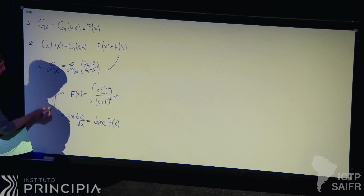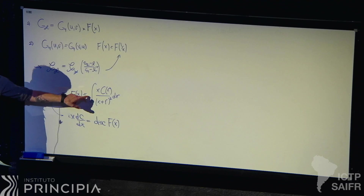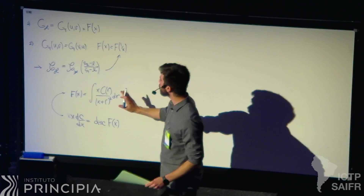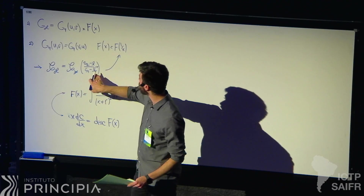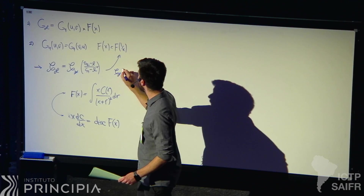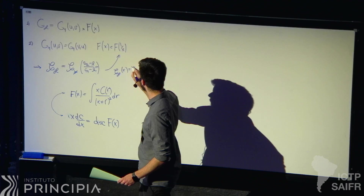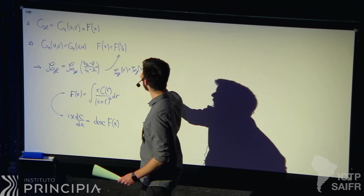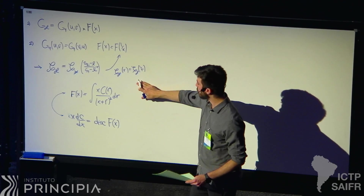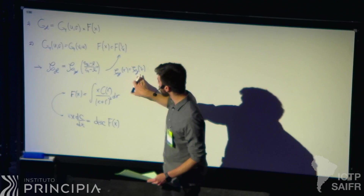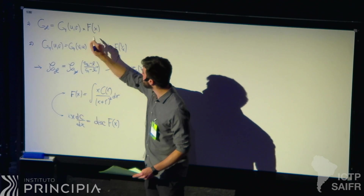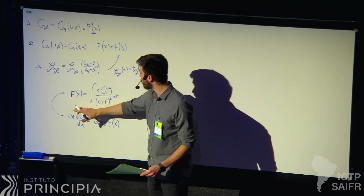These are the same expressions — it's simple to go from one to the other by taking a derivative; it's basically the Cauchy kernel that you can invert using a discontinuity. This structure constant depends only on this ratio R, and this quantity also has this inversion symmetry. This three-point function depends only on R and is related to the finite part of the correlator via this simple map.